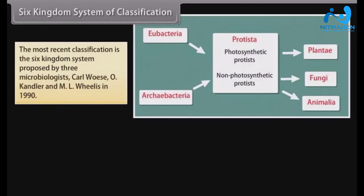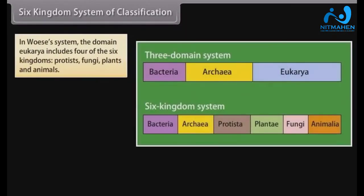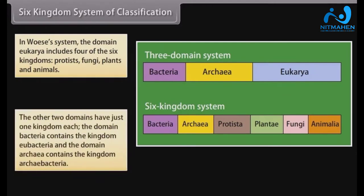Six Kingdom System of Classification. The most recent classification is the six kingdom system proposed by three microbiologists — Carl Woese, O. Kandler, and Emil Wheelis in 1990. They proposed that all organisms be divided into three major groups called domains, above kingdom level: Eukarya, Bacteria, and Archaea. In their system, the domain Eukarya includes four of the six kingdoms: Protists, Fungi, Plants, and Animals. The other two domains have just one kingdom each — the domain Bacteria contains kingdom Eubacteria, and the domain Archaea contains kingdom Archaebacteria.